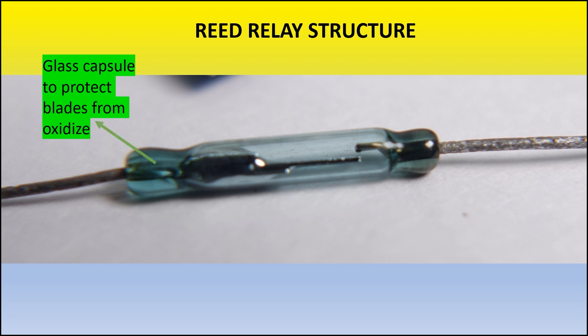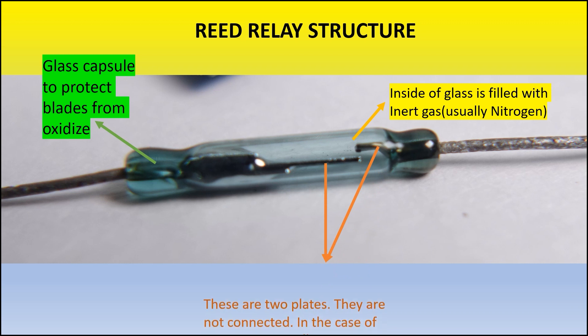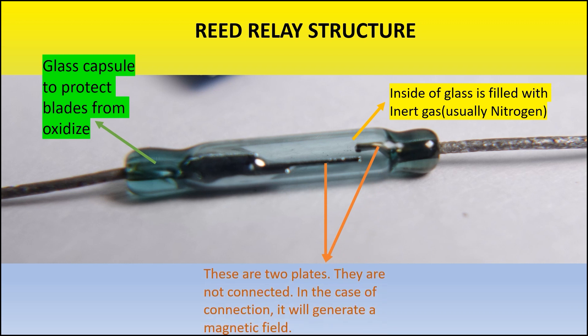And also here, these are the two plates. These two plates are not connected in the normal one. When the external magnet is facing, they will connect to each other. And the magnetic field around it, you cannot see it, but it will get connected to each other. And these are the reed pins.